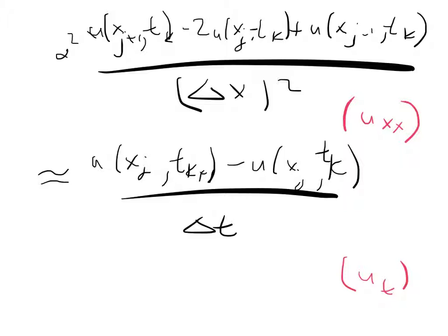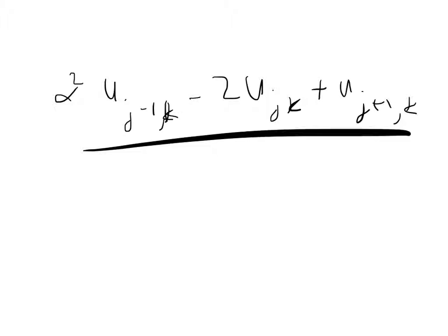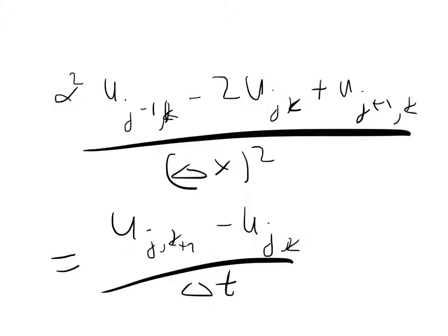If we rearrange this and we consolidate the notation, we actually realize that this all equals α²[U_{j-1,k} - 2U_{j,k} + U_{j+1,k}]/Δx² equals [U_{j,k+1} - U_{j,k}]/Δt. This may seem similar to what we had earlier. Note instead that we are actually dealing with capital U's. Here, we distinguish lowercase u and capital U as follows: lowercase u is the exact solution of the differential equation, whereas uppercase U is the approximation to the difference equation that we signified here.